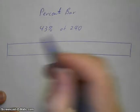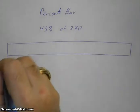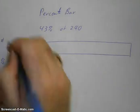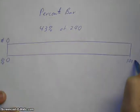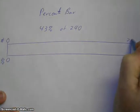On one side we're going to have the percent, on the other side we're going to have the number. So 0% is 0, 100% would be 240.